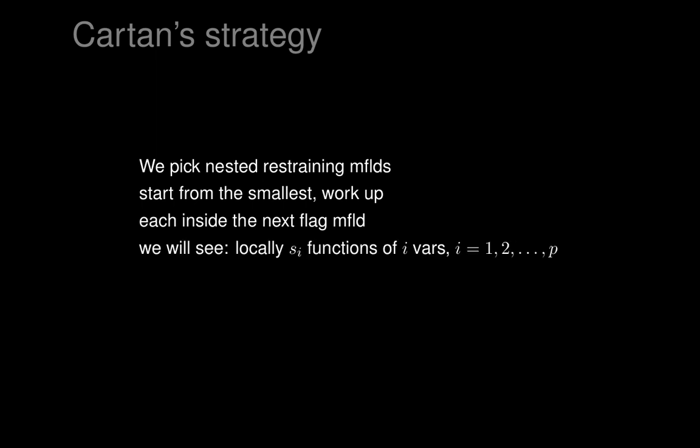We'll see that in order to make this process work — to pick the restraining manifolds so that we get the required uniqueness condition at each step — we'll have to make it depend locally on s_i functions of i variables, and that's where the characters show up. That's what we expected in the Cartan-Kähler theorem: there should be s_i functions of i variables. The restraining manifold is exactly the imposition of that many functions of that many variables.